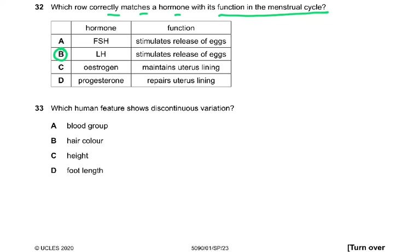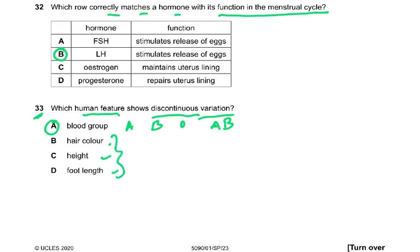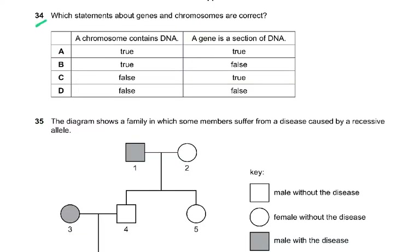Question 33: which human feature shows discontinuous variation? Discontinuous variation has no intermediates — just a few distinct categories. The answer is A because blood group has only four distinct categories: A, B, O, or AB. Hair colour, heights of 16-year-old boys, and foot length all show many different gradations, making them examples of continuous variation.